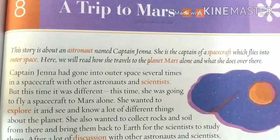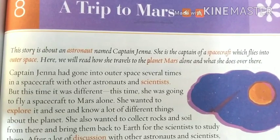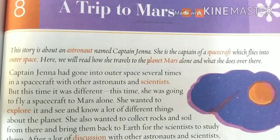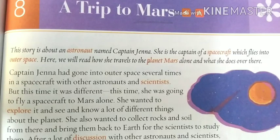We will find scientific facts related to the planet Mars, like the distance, the physical characteristics, why it is the Red Planet and so on. We will notice how there is an astronaut named Captain Jenna who carefully completes her mission, collects all the samples and brings them back to Earth for scientific research. We will also come across a robot named Curio and read about how the robot functions. So let's start the chapter.